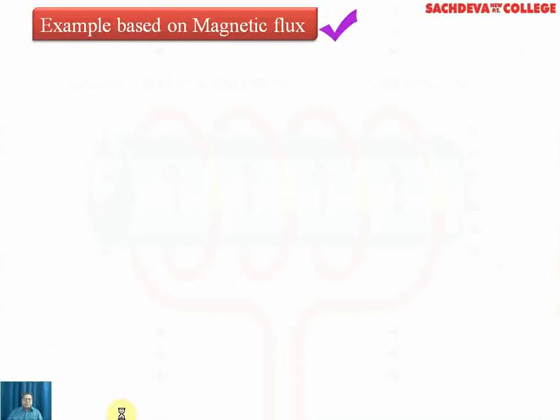Now, there are certain examples based on magnetic flux — that is, the calculation of magnetic flux, phi, which is the cross product of B and A, or in scalar form it is B·A·cosθ.